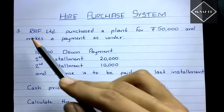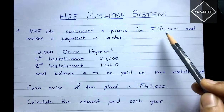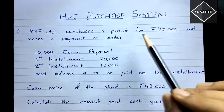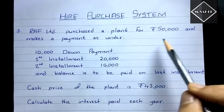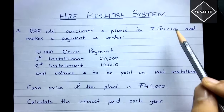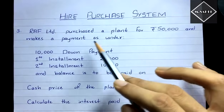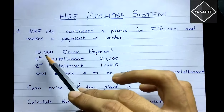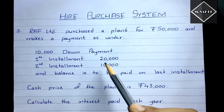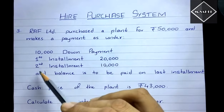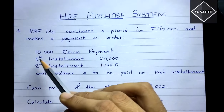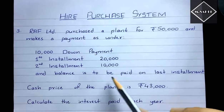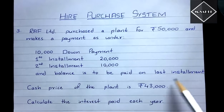The question states that RAF Limited purchased a plant under Hire Purchase System for rupees 50,000. This 50,000 is the higher purchase price. Payments are made as follows: a down payment of 10,000, then a first installment of 20,000 at the end of year one, a second installment of 10,000 at the end of year two, and the balance to be paid in the last installment.